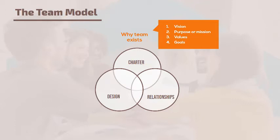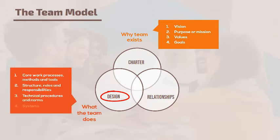The second element of the team is design, which describes what your team actually does and how it organizes itself to accomplish its mission. This includes things like the core work processes, the methods and tools of your team, structure or roles and responsibilities, how you organize people to accomplish your work, technical procedures, norms, and systems that support your team.